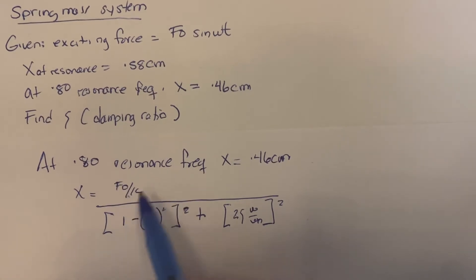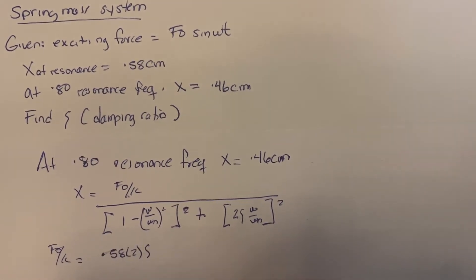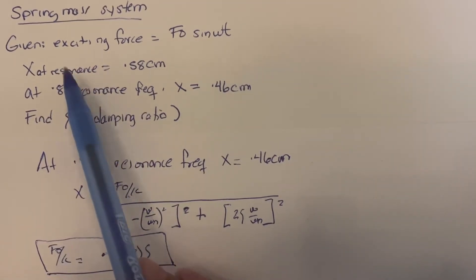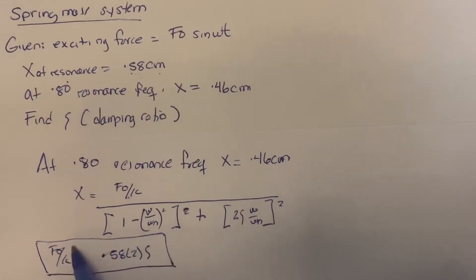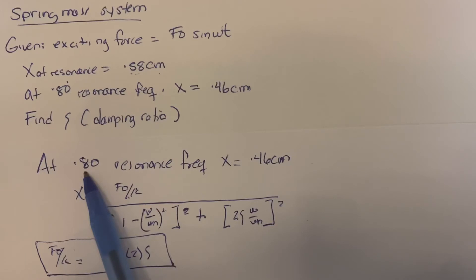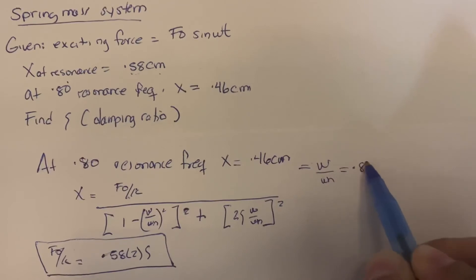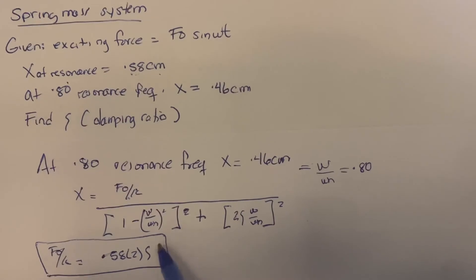Previously we found that F0 over k equals 0.58 times 2 times damping ratio, which came from the first condition where the resonance amplitude was 0.58 centimeters. We can substitute this into the amplitude equation and also substitute W over Wn equals 0.8. This leaves the damping ratio as the only unknown, so let's solve for it.